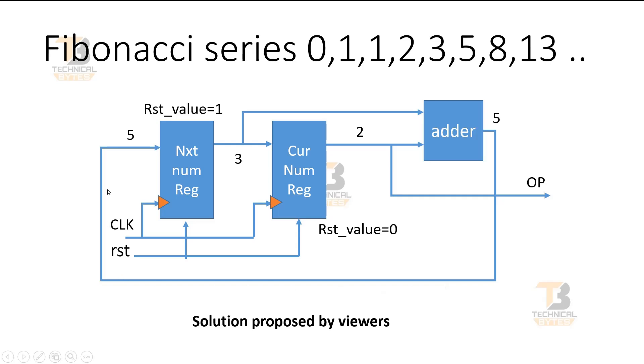When the next clock edge comes, 3 will appear at the first register. When 3 and 2 are applied to the adder, the adder will give 5 at its output. This 5 is applied at the input of the second register and at the output we will get 2, that is the fourth number, and so on.